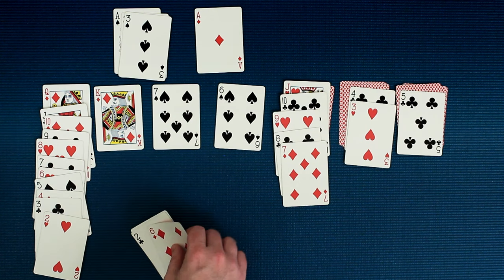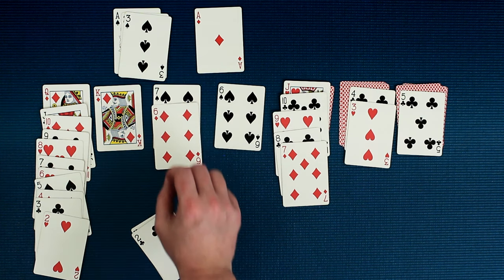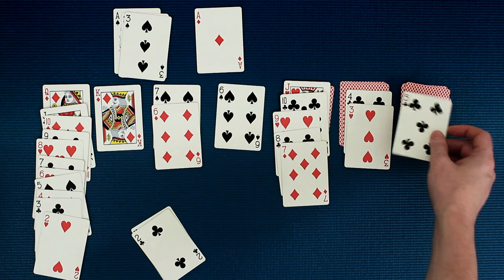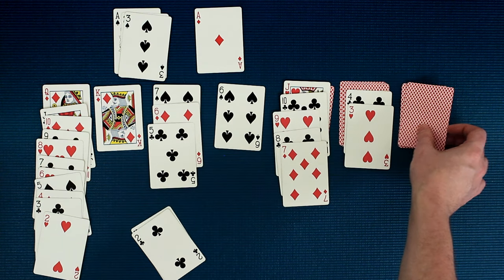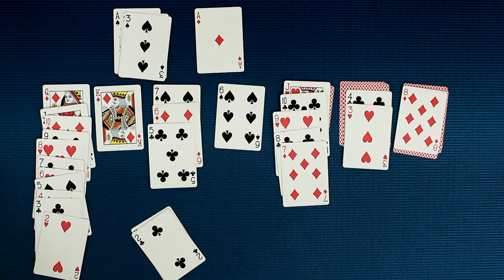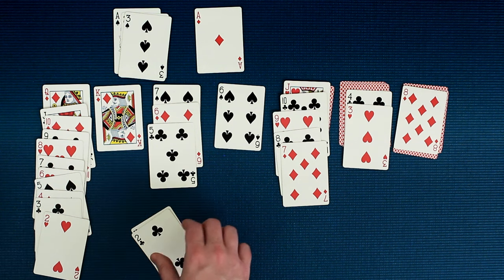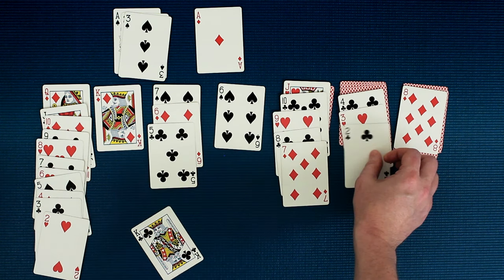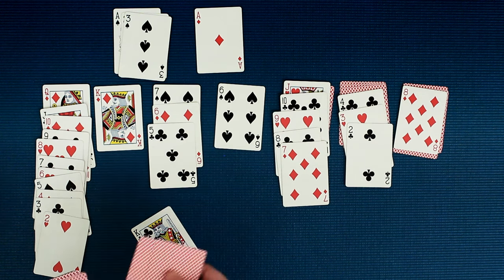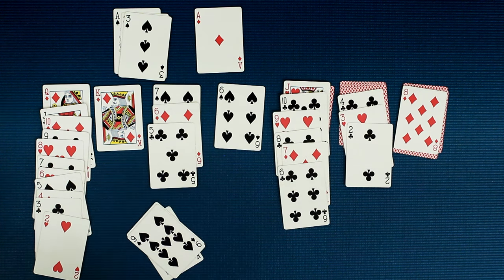So you can move this red six to the black seven. If it was a king, you could put it in an empty spot. And if it's an ace, you could bring it up top. You got it. If you use the top card of the talon, then you could use the next one that's on top and just keep going down. Or you can deal more cards on top. Again, three at a time.